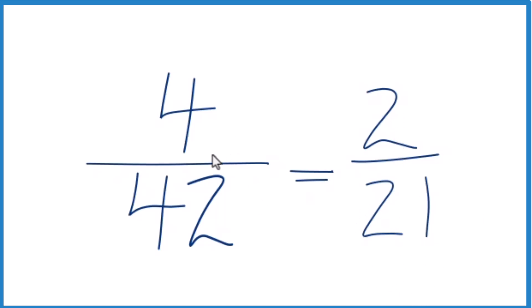So in answer to our question, when we simplify the fraction for 40 seconds, we get 2 21sts.